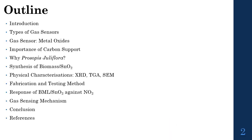This is my outline of the talk. I will start with introduction, then list out the types of gas sensors, then discuss the significance of metal oxide gas sensors and the importance of carbon support. Then why we have chosen Prosopis julifera for this particular work, then synthesis of Biomass-SnO2 nanocomposites. Later we will discuss physical characterization: XRD, TGA, and SEM. Then fabrication and testing of gas sensors with its mechanisms. Finally, I will list conclusions and references.